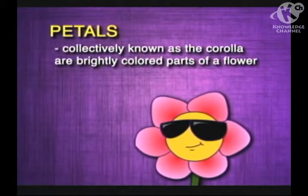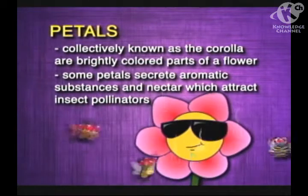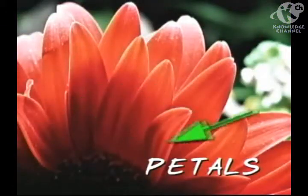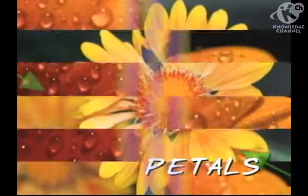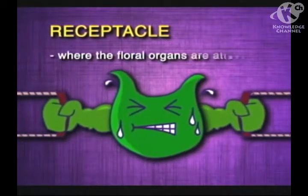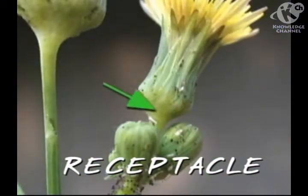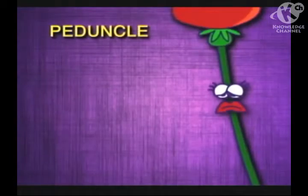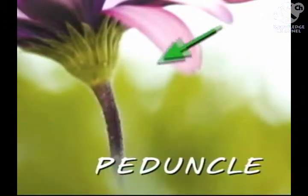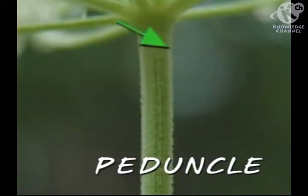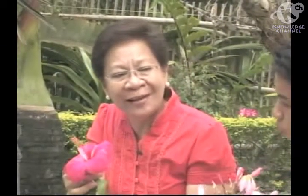The petals, collectively known as the corolla, are the brightly colored parts of the flower. These produce aromas and nectar, which attract insect pollinators. The receptacle is the part where the floral organs are attached. The peduncle is the stalk of a single flower.